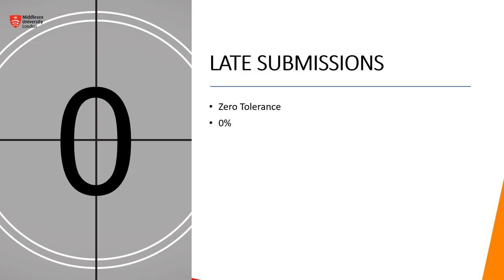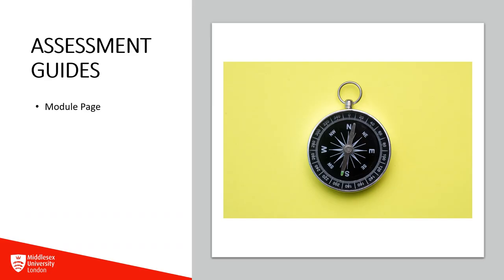There is a zero percent late submission policy in this class — I do not want you to miss deadlines. There are circumstances that come up which we can address privately, but the policy stands. In the event that you do miss the deadline, you will have an opportunity to resubmit, but the maximum score allocation for a resubmission is 40 percent. Assessment guides for both assessment one and assessment two are located on your module page.